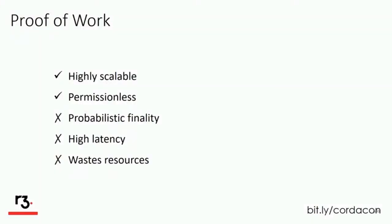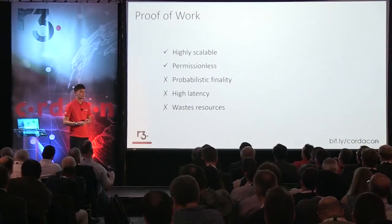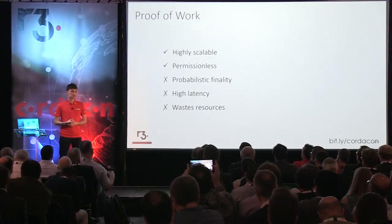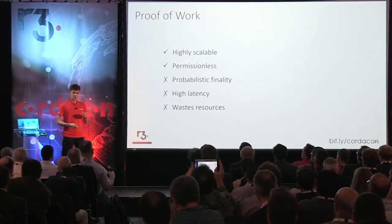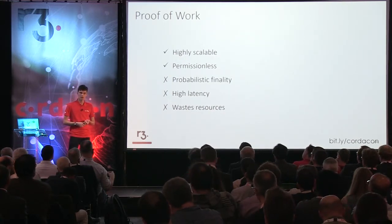Proof of work has some interesting properties. First, it's highly scalable — there can be tens of thousands of nodes participating in the consensus round. It also allows anyone to participate, you can have anonymous identities, and there's no trust assumed.